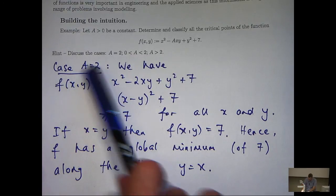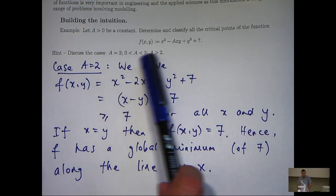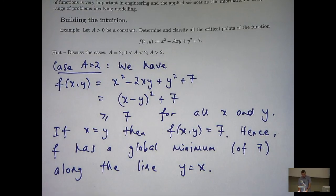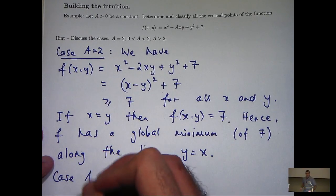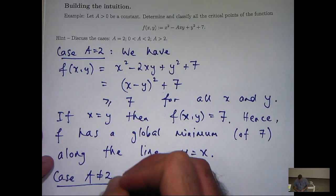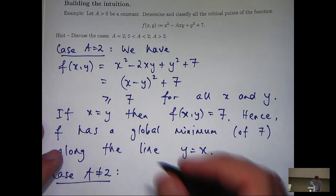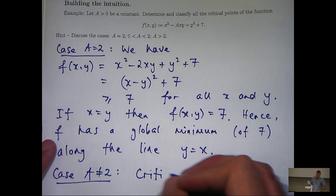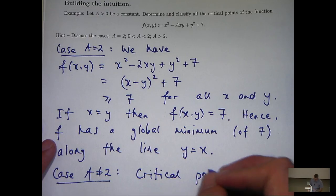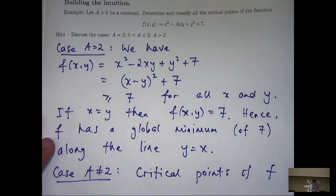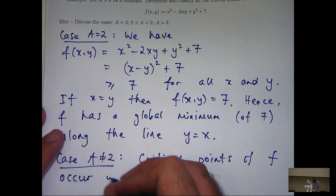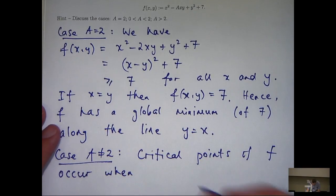Okay, so that's the case a equals 2. Now, for these cases, we're going to use the standard calculus approach and involve the so-called second derivative test. So, first of all, let's rule out the case a equals 2, and the critical points of f occur when we set the partial derivatives equal to 0.